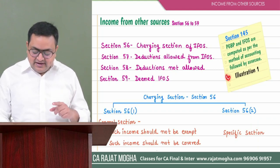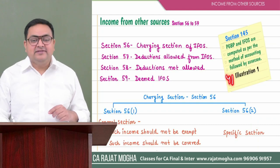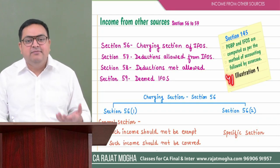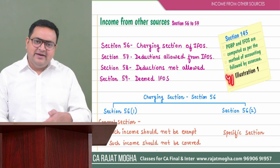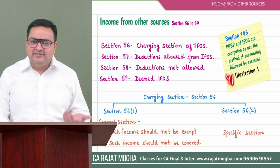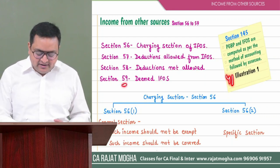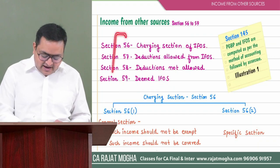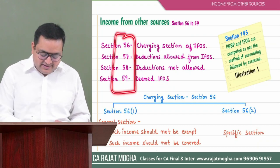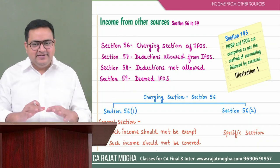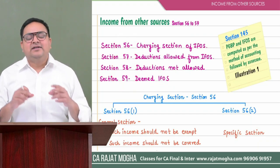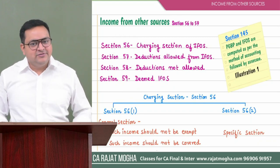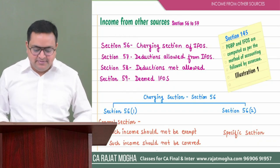In PGBP there is Section 41 for deemed PGBP income — deemed business income. Similarly, in IFOS we have Section 59, which is deemed IFOS. That is why I call IFOS a mini-PGBP — most of the sections are very similar to those in PGBP.